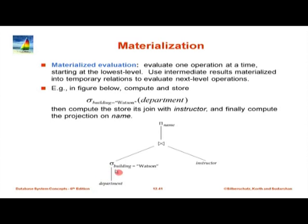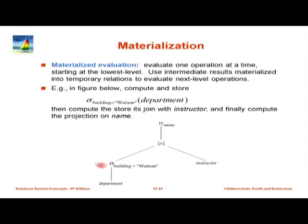Here is a query: select building equal to Watson on department, join with instructor, and project on name with duplicate elimination. One way is to start at the lowest operation — select — run it, create the output, and store it. You snip off that part of the expression tree and replace it with the materialized result. Then do the join of that temporary relation with instructor and store it. Then apply the project operator and store the output. This is called materialized evaluation — done bottom-up on the tree.